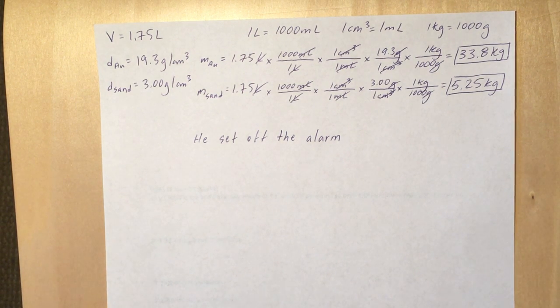So we do that same calculation with sand, converting liters to milliliters, then converting milliliters to cubic centimeters, then going back and using the density as the next conversion factor to convert cubic centimeters to grams, and then again converting that grams to kilograms.